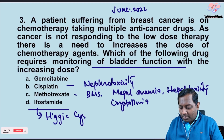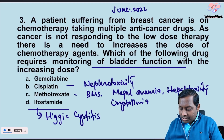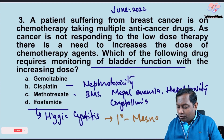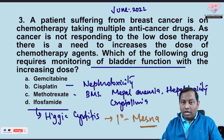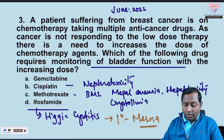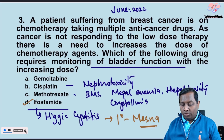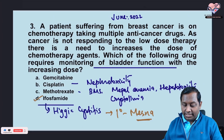To prevent hemorrhagic cystitis, we have prophylaxis with mesna — you are supposed to run an IV infusion of mesna. If you are using ifosfamide, make sure you are keeping an eye on the bladder function. Cyclophosphamide and ifosfamide both metabolize to acrolein — acrolein is the metabolite that causes hemorrhagic cystitis.